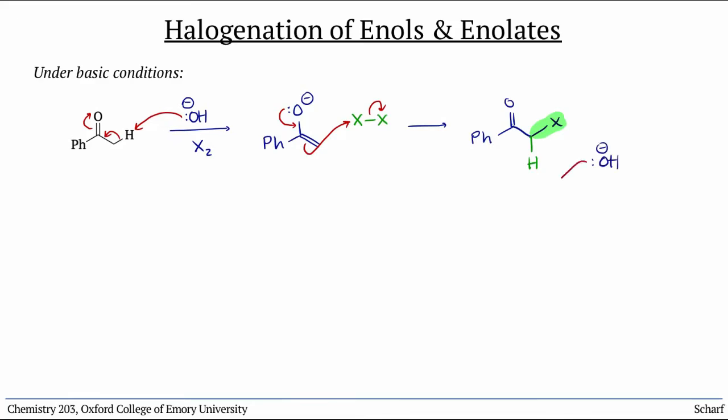So the base deprotonates again. We get a new enolate, which attacks X2 once again. Now two halogens have been installed at the alpha carbon.